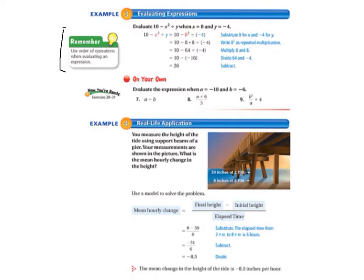So, our expression is 10 minus x squared divided by y when x equals 8 and y equals negative 4. So, our first step is to substitute 8 for x and negative 4 for y. So, when we've done that, our new expression is 10 minus 8 squared divided by negative 4.